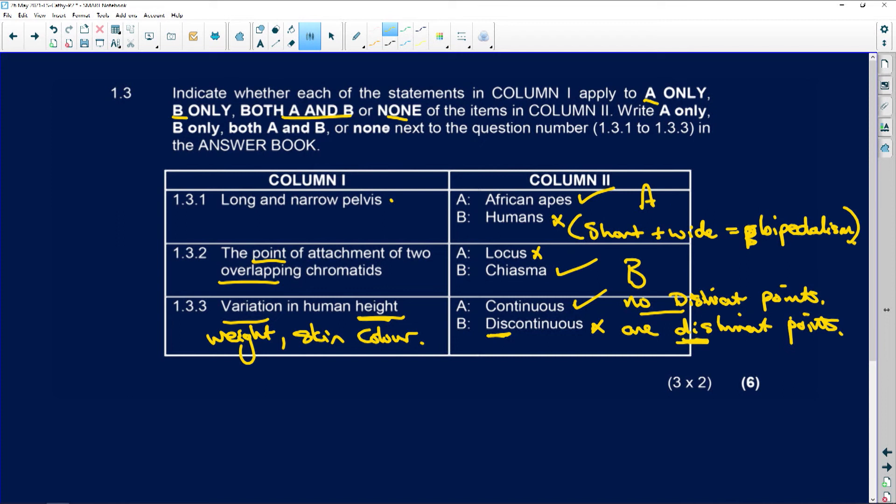Discontinuous, distinct point break. So you would have, or distinct characteristics. So example would be fingerprints, blood groups. Okay, so blood groups A, B, AB, or O. Done. That's it. So it's discontinuous.